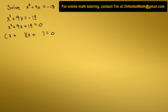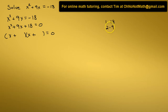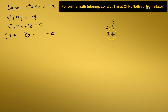We need to find two numbers that multiply together to give us 18 and add together to give us 9. Well, 1 times 18 equals 18, but 1 plus 18 is 19, so those two numbers don't work. Let's try 2 times 9. 2 times 9 equals 18, but 2 plus 9 is 11, so those numbers don't work either. How about 3 times 6? 3 times 6 equals 18, and 3 plus 6 equals 9. So those are the two numbers we want for the constants in our binomials — 3 and 6.